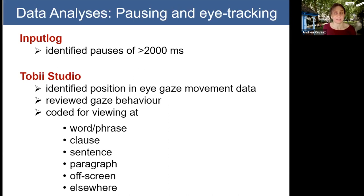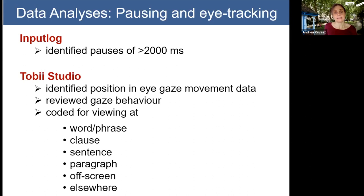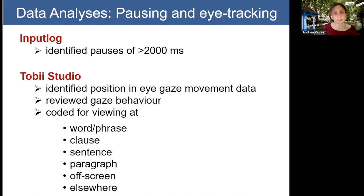Moving on to the eye-tracking analysis: in the InputLog software we first identified pauses — defined as silences or lack of keystrokes longer than 2,000 milliseconds. Then in the eye-tracking software, we identified the position of the pause and reviewed the eye gaze behaviour during that pause. We coded whether participants looked at the previous word or phrase they had produced, the previous clause, sentence, paragraph, or whether they looked somewhere off screen or elsewhere.